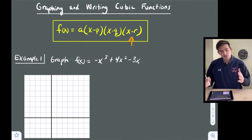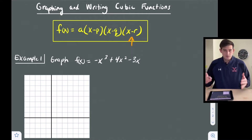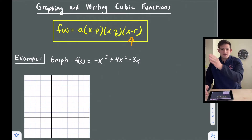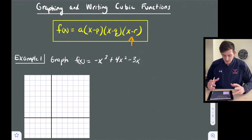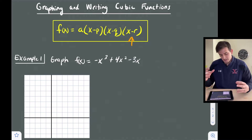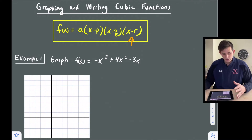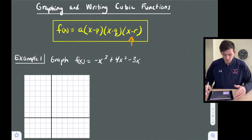Our cubic function is going to cross the x-axis three times, which gives us a curve feature when we graph it. So we still have f(x) equals a, times x minus p, times x minus q, and x minus r, where p, q, and r are our x-intercepts.